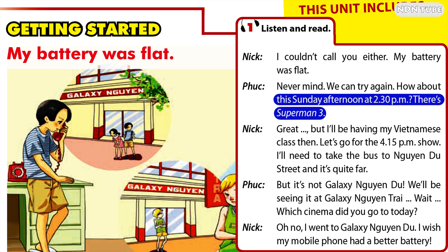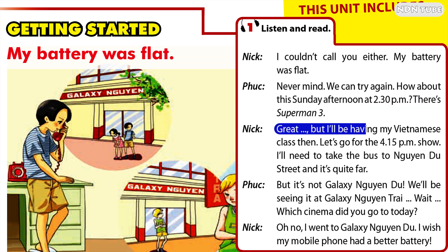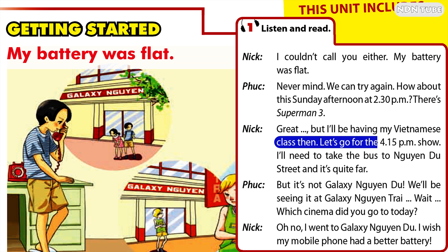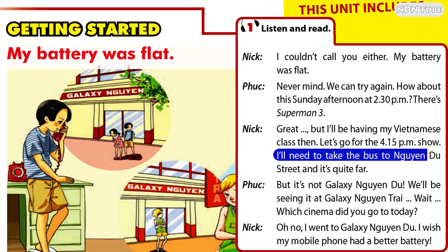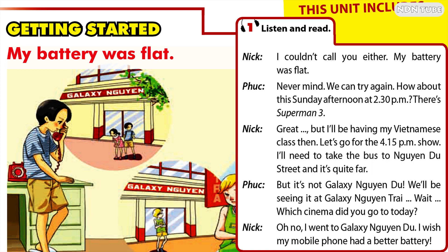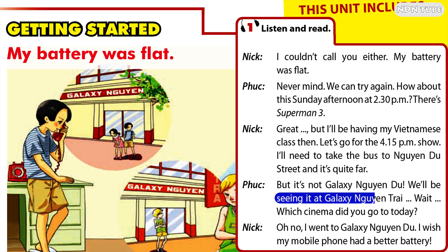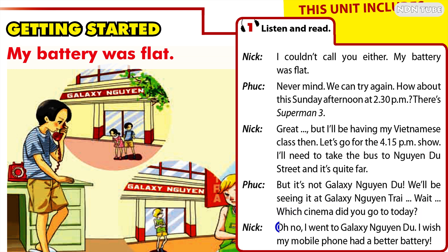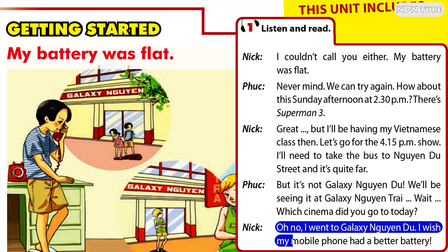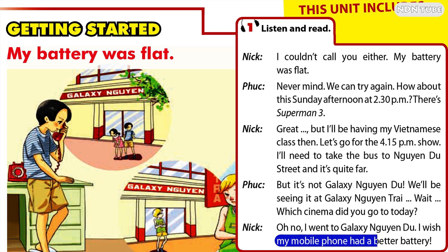There's Superman 3. Great, but I'll be having my Vietnamese class then. Let's go for the 4.15pm show. I'll need to take the bus to Win You Street and it's quite far. But it's not Galaxy Win You — we'll be seeing it at Galaxy Win Chai. Wait, which cinema did you go to today? Oh no, I went to Galaxy Win You. I wish my mobile phone had a better battery.